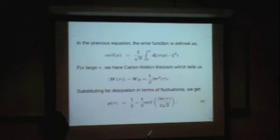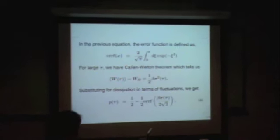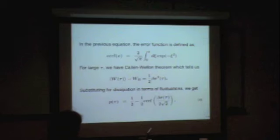For larger τ, we have the Callan-Byrton theorem fluctuation dissipation theorem, which tells me that the average work minus the reversible work, which we call as dissipation, is equal to half β σ². You will recover it from the general expression. And if you substitute, that is if you are very close to quasi-reversibility, I can substitute this expression in the error function, I will find that p(τ) is half minus half of error function of this quantity.